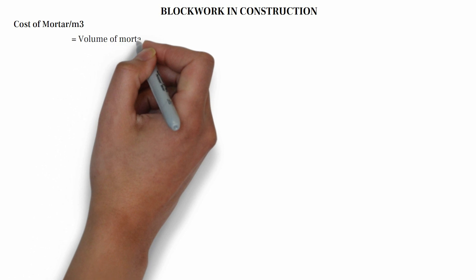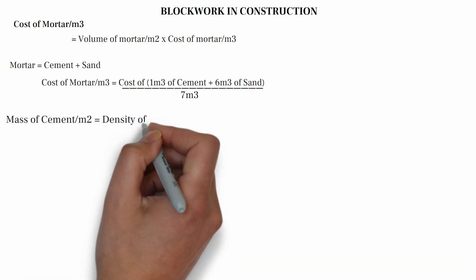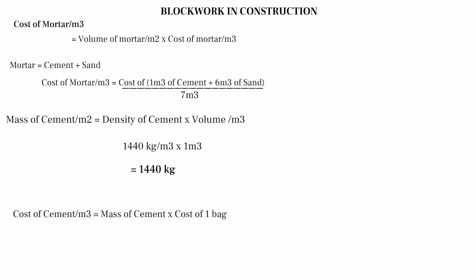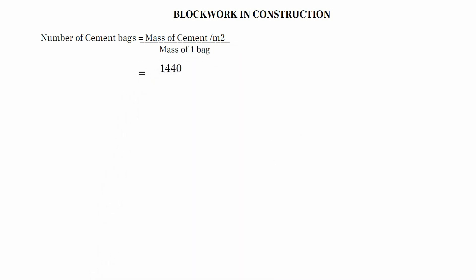Cost of mortar per meter cube equals volume of mortar per meter square multiplied by cost of mortar per meter cube. Mortar equals cement plus sand. Cost of mortar per meter cube equals cost of 1 meter cube of cement plus 6 meter cube of sand, divided by 7 meter cube. Mass of cement per meter cube equals density of cement multiplied by volume: 1,440 kg/m³ multiplied by 1 m³ equals 1,440 kg. Number of cement bags equals 1,440 divided by 50, giving 28.8 bags.